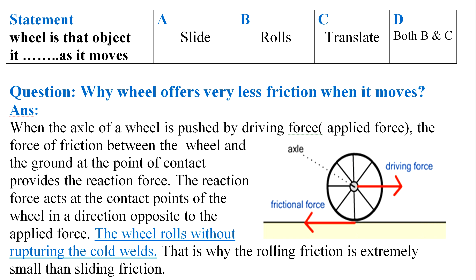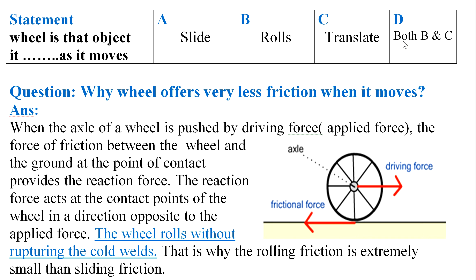Option A is slide, B rolls, C translate, and D both B and C. If you see the diagram, on the right side is a driving force and on the left side is a frictional force. The driving force will move the wheel in a straight line — it translates — and around the axis the wheel will have rotatory motion, so it rolls as well. The right option is both B and C.